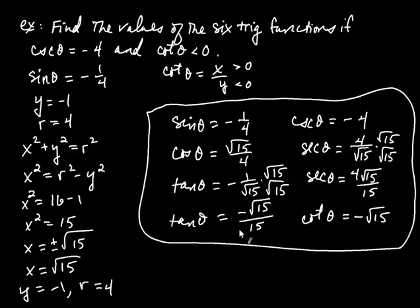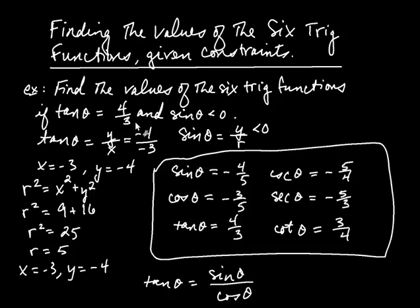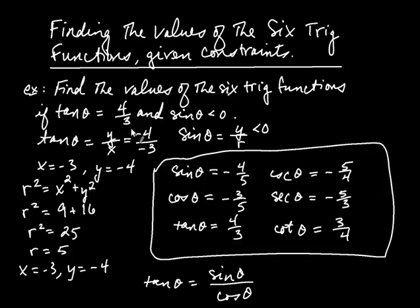One important warning about the previous problem: there's an identity that tangent equals sine divided by cosine. You have to be really careful not to conclude that sine is negative four and cosine is negative three — that would be wrong. Sine and cosine are always between negative one and positive one. Just because sine divided by cosine equals four-thirds doesn't mean sine is four or cosine is three. When solving problems with constraints, don't assume values for numerator or denominator just because their ratio looks like a given fraction.